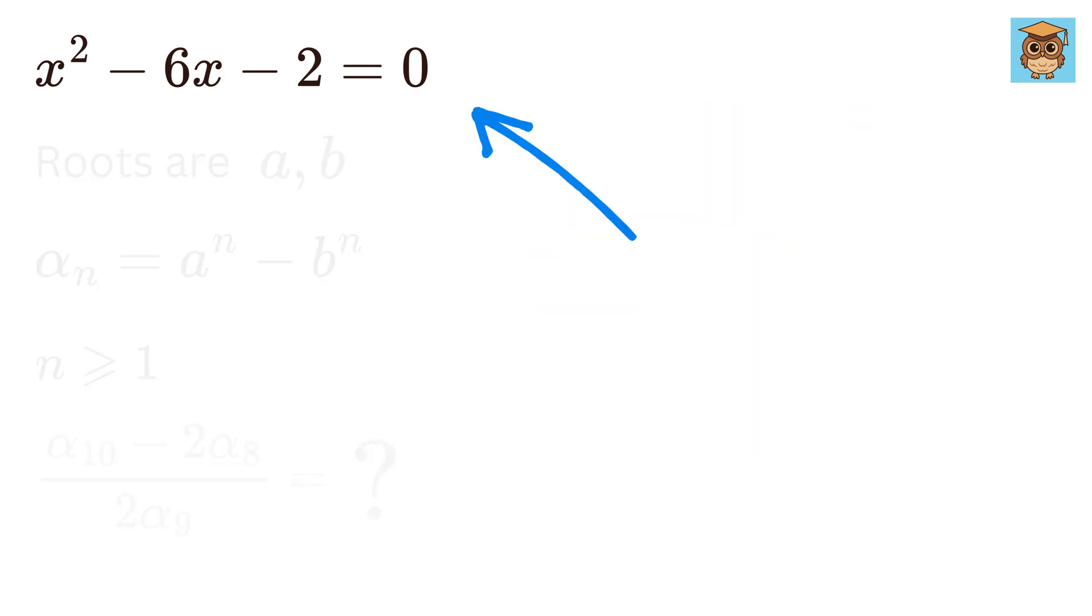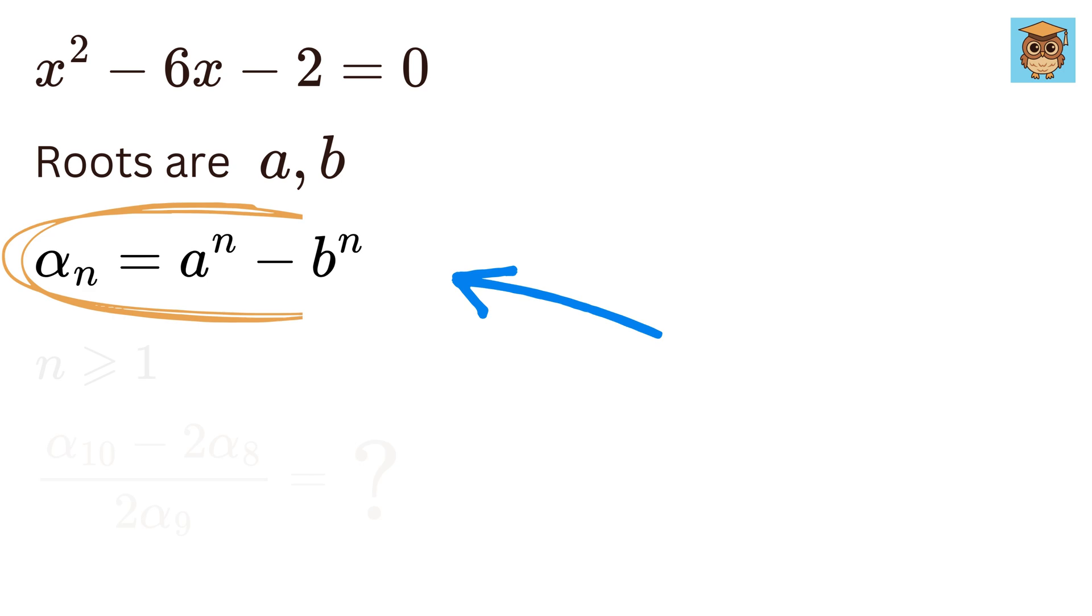We have this quadratic equation, x² - 6x - 2 = 0, whose roots are a and b. Now we have a variable α_n, which is given as α_n = a^n - b^n, where n is a positive integer.